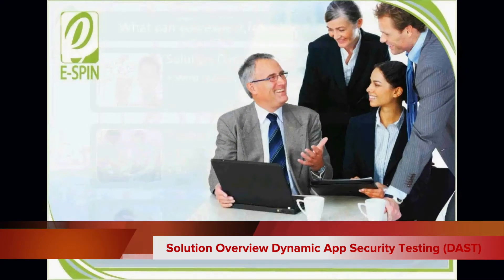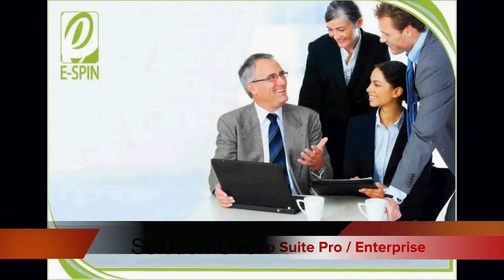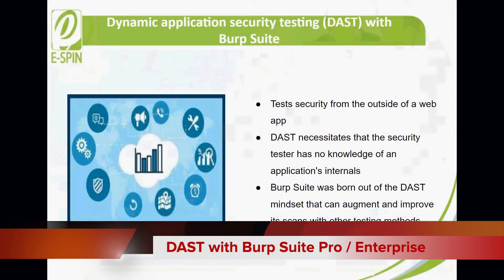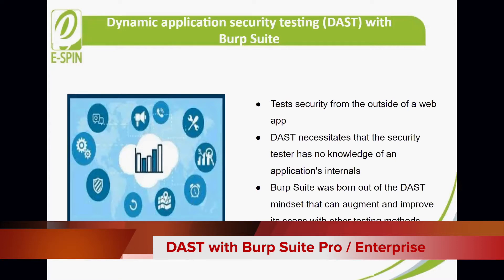Solution overview of DAST. Dynamic Application Security Testing, or DAST, tests the security from the outside of a web app. A good analogy would be testing the security of a bank by attacking it. DAST necessitates that the security tester has no knowledge of an application's internals. This is called a black box testing method, because the tester can't see inside the metaphorical box. Its aim is to simulate a real attack.